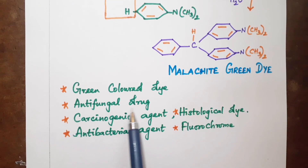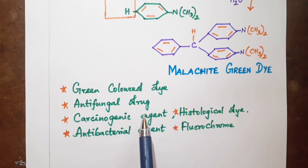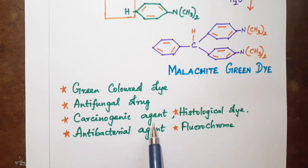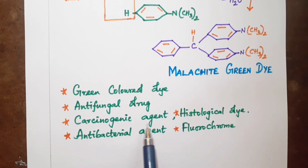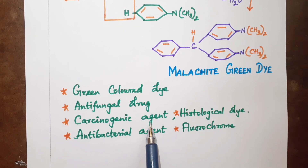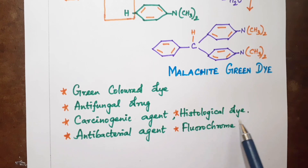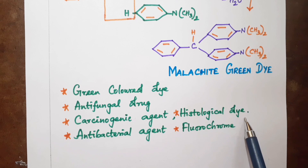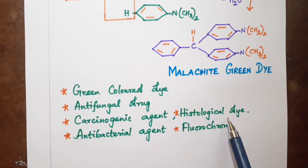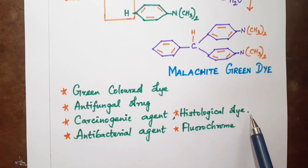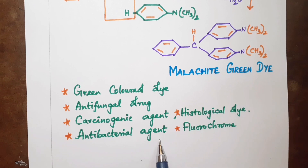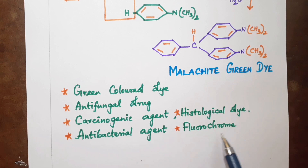Malachite green has several important properties. It is an antifungal drug. It is also a carcinogenic agent. It is used as a histological dye and in plant pathology. It is used in histology and as an antibacterial agent.